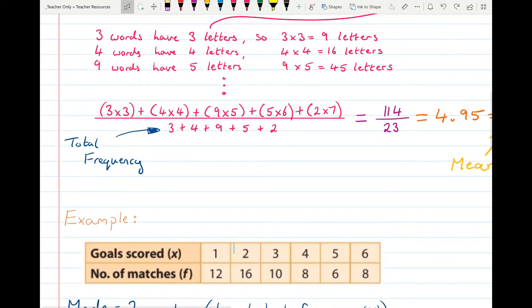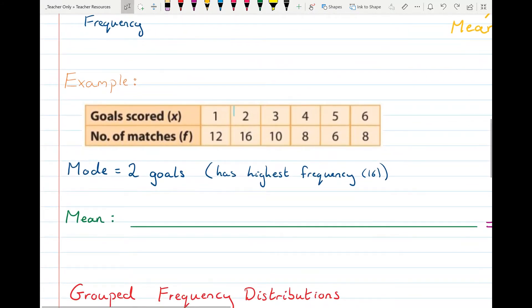What we're going to do is another example now, we're talking about goals scored in a number of matches. So the data here, if you're finding the mode, the mode is the highest frequency. 16 matches there were two goals scored so the mode is two goals because it has the highest frequency.